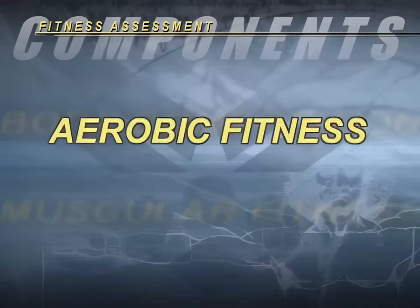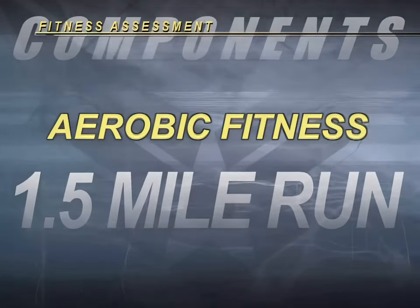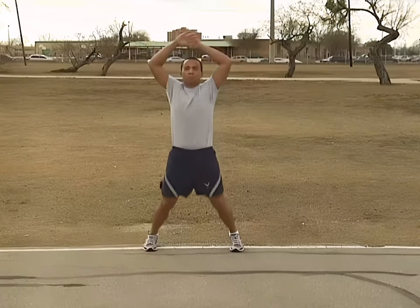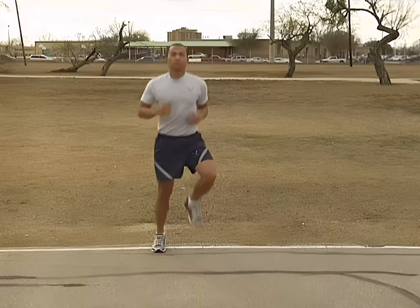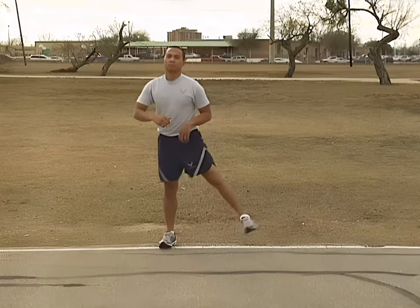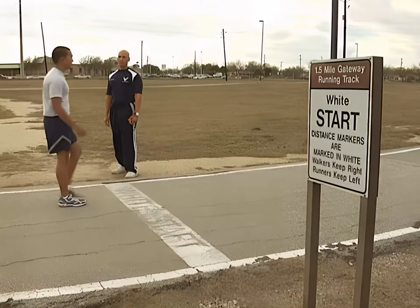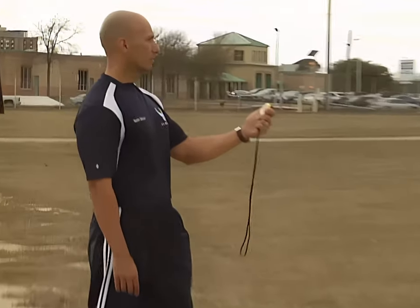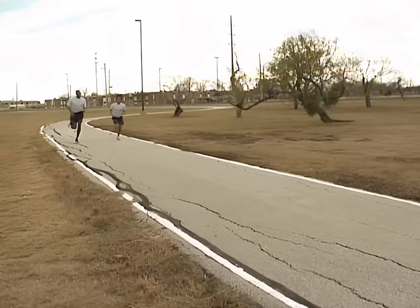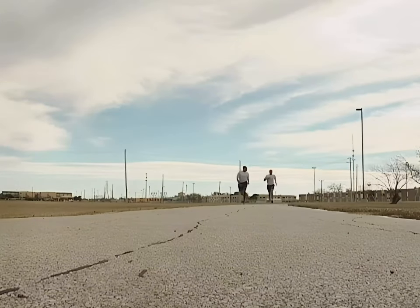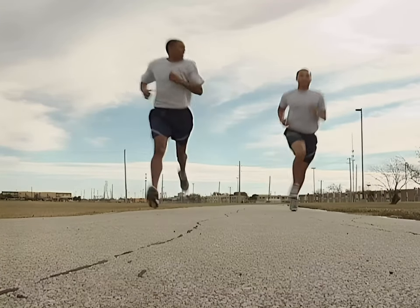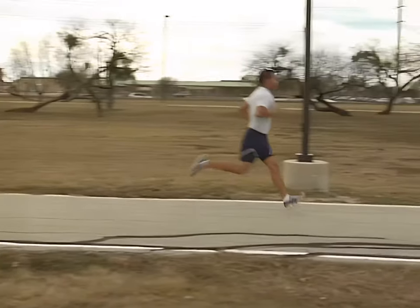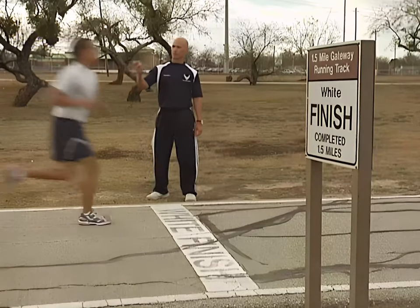Unless medically exempt, all members will complete the 1.5 mile run as the aerobic component of the fitness assessment. The 1.5 mile run is used to measure cardiorespiratory fitness. You may warm up prior to beginning the run. When you are ready, line up behind the starting line. The assessor will tell you when to begin with the start of a stopwatch. You may have someone pace you while you run, but there may be no physical assistance and you are required to stay on the course. Violating these requirements will result in termination of the test. Your completion time will be recorded when you cross the finish line.